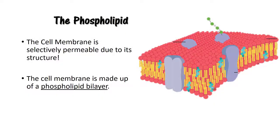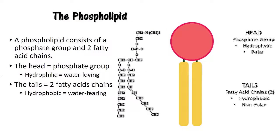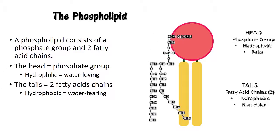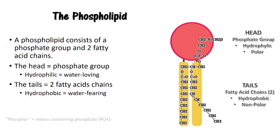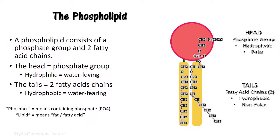The cell membrane is selectively permeable due to its structure. The cell membrane is composed of a double layer of phospholipids. A phospholipid consists of a phosphate group with two fatty acid chains. The head group is the phosphate group, and it is hydrophilic, or water-loving. The fatty acid tails are hydrophobic, or water-fearing.